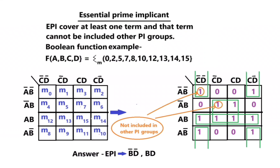Hello. An Essential Prime Implicant (EPI) covers at least one term, and that term cannot be included in any other PI group.